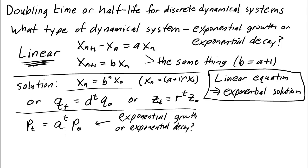Well, for each time step, I multiply by a, and if a is bigger than 1, then I get bigger. So exponential growth corresponds to a being greater than 1. And if I multiply by a number between 0 and 1, then I get smaller each time. So exponential decay corresponds to a being between 0 and 1.